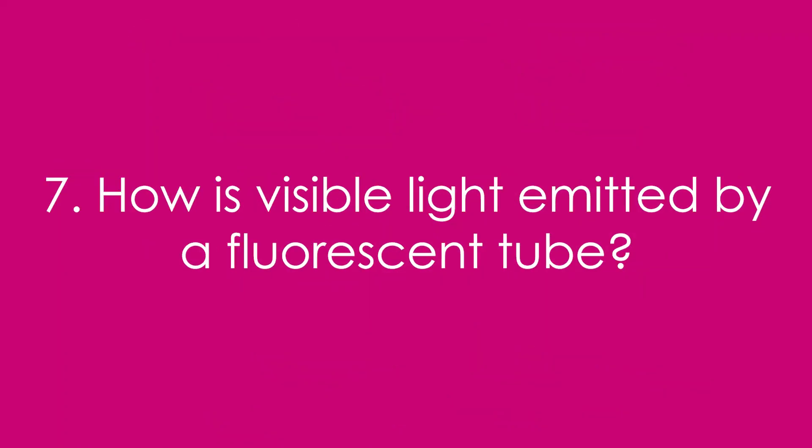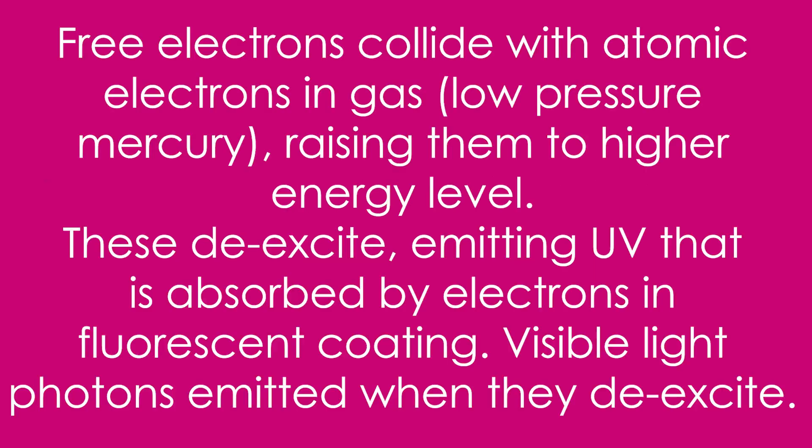Seven, how is visible light emitted by a fluorescent tube? First, the free electrons collide with the electrons in the gas — that's low pressure mercury usually — raising them to a higher energy level. When these de-excite, they emit UV photons that are absorbed by the electrons in the fluorescent coating. Visible light photons are emitted when these de-excite.